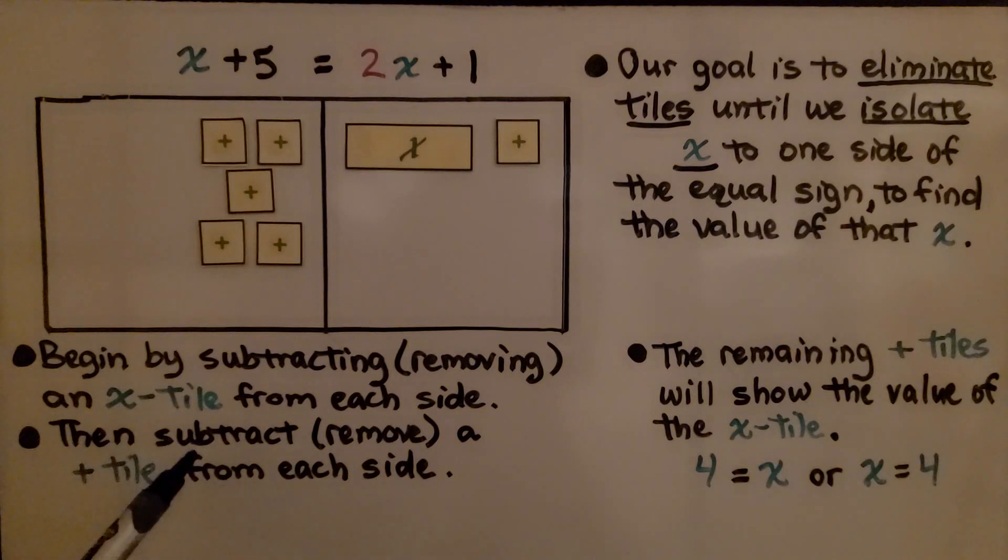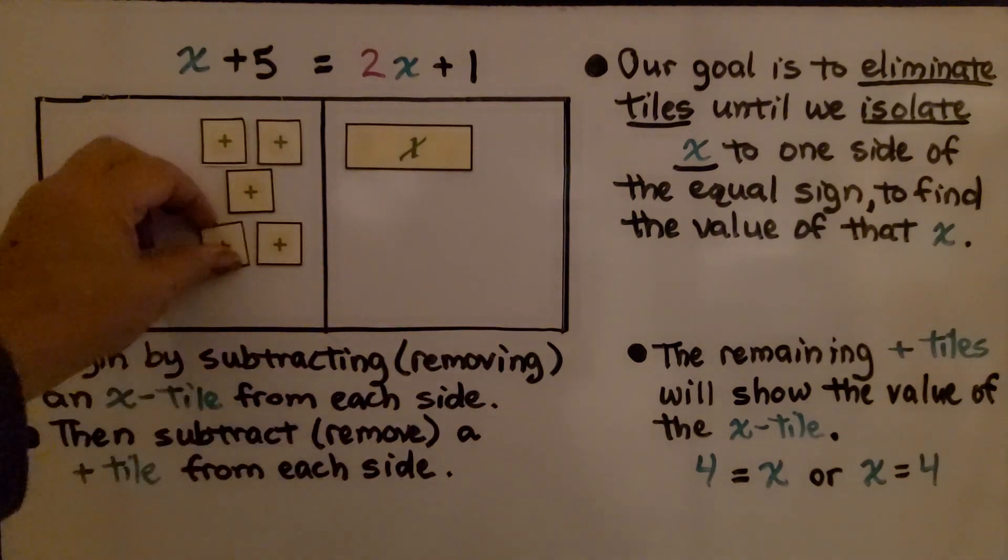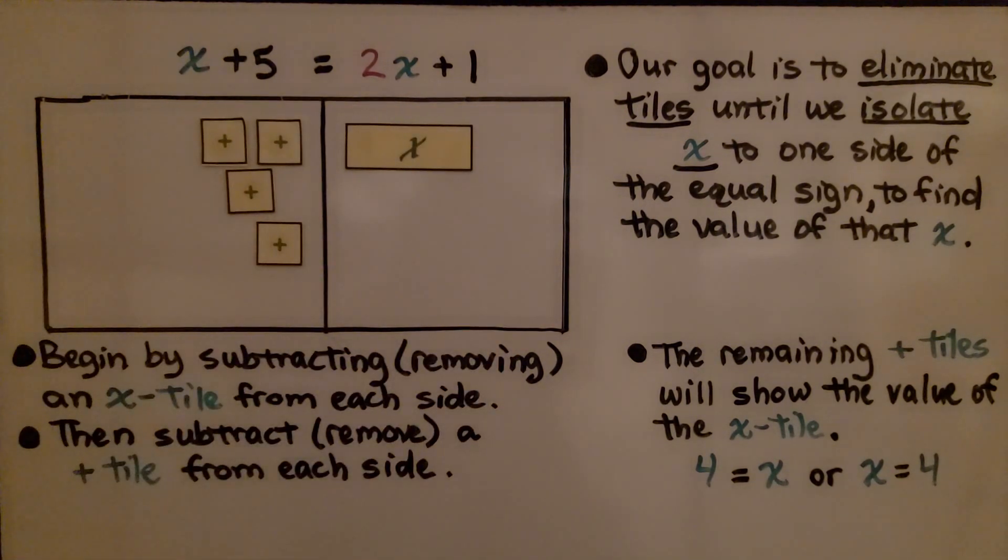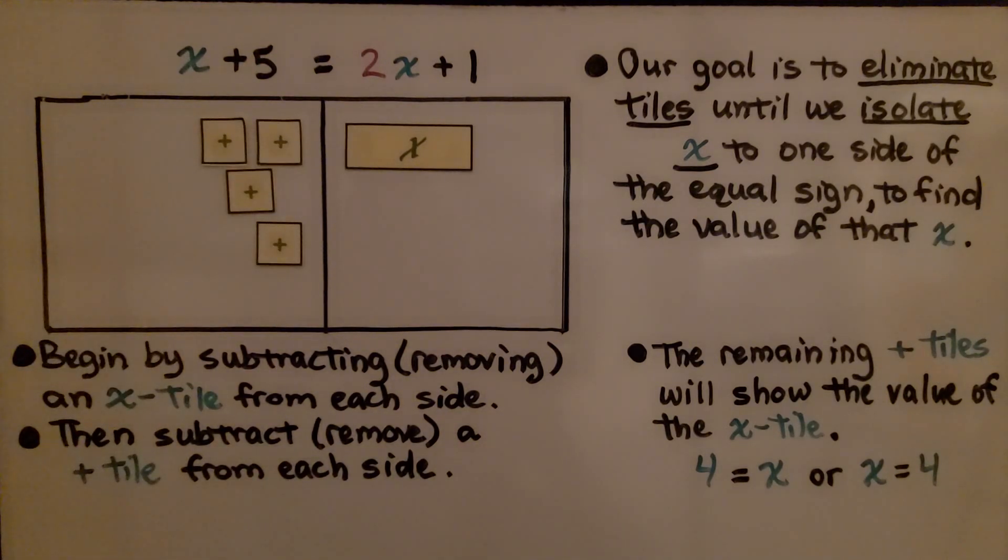Then we subtract, remove, a plus tile from each side. We take away this plus tile and we take away one of these plus tiles. The remaining plus tiles will show the value of the x tile. We have 4 equals x, or x equals 4.